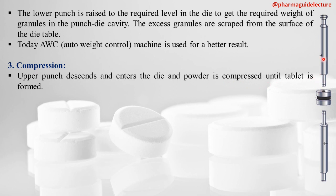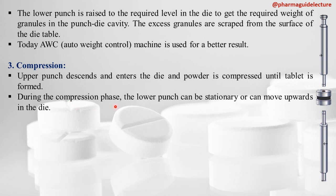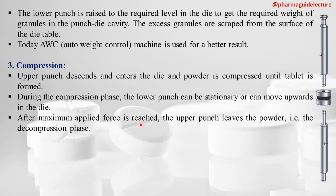The upper punch descends into the die cavity to compress the powder and make the tablet. During the compression phase, the lower punch can be stationary or it can move upwards. The lower punch remains stationary in single-punch machines, while in rotary press machines the lower punch moves upwards and the upper punch moves downwards. After the maximum force is reached, the upper punch leaves the powder — this is the decompression phase.